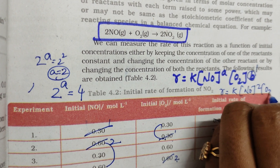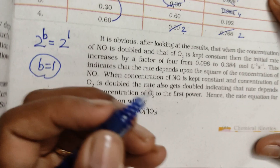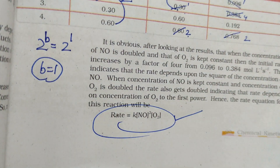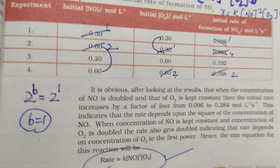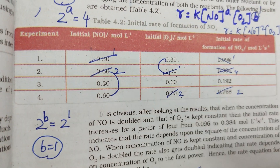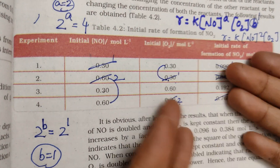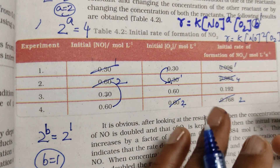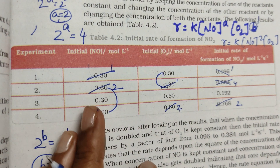Rate is equal to k into [NO]² into [O₂]¹. That is your answer. Everyone clear? This is the same methodology — the simple logic is that if you do rough work separately it takes more time.